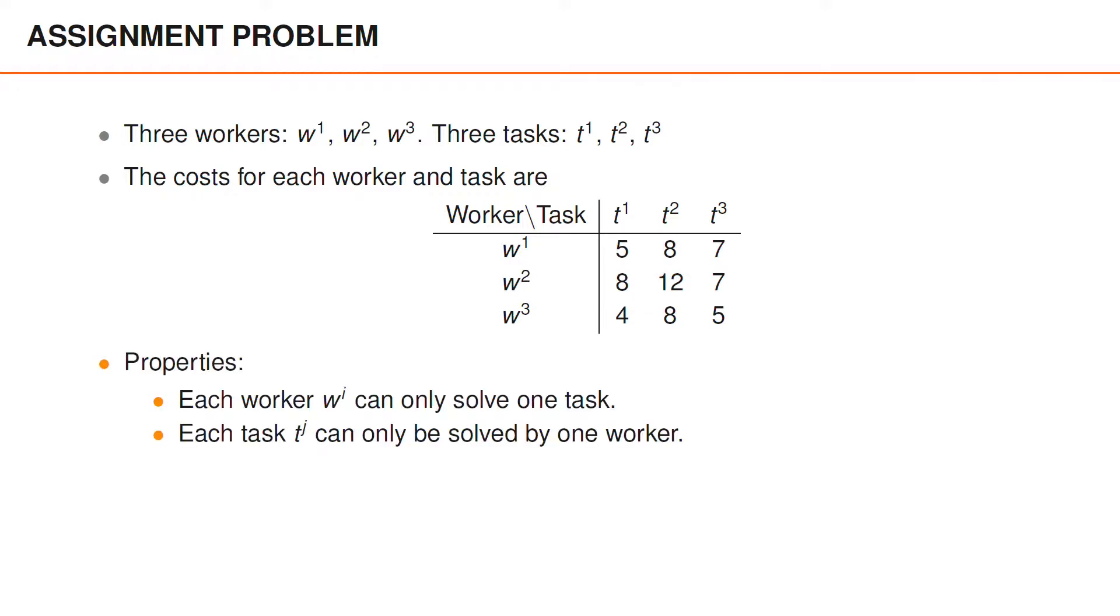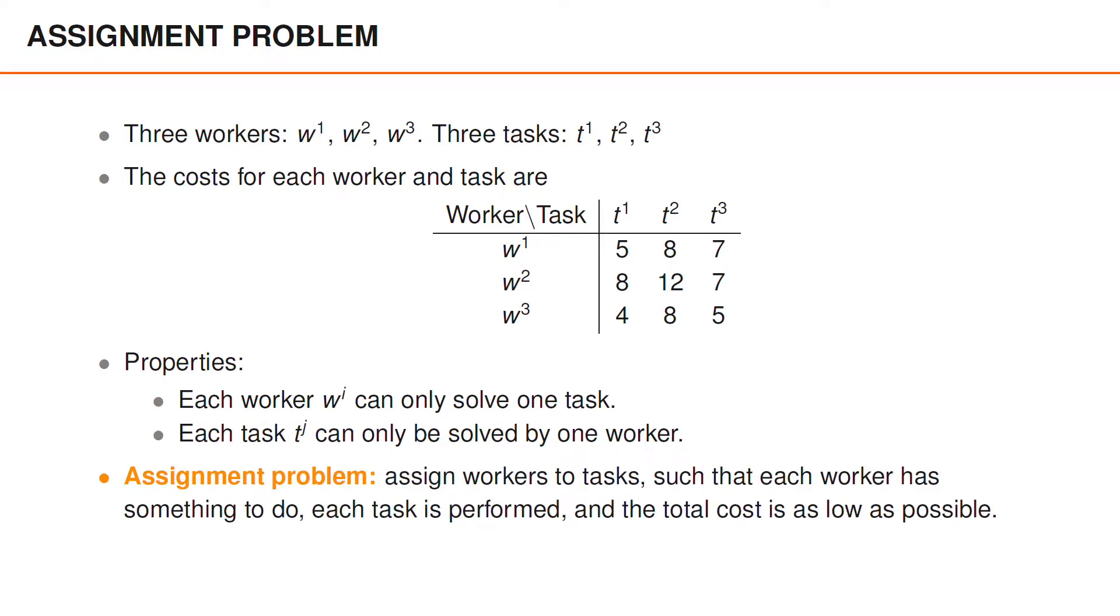Some properties of this problem are that each worker can only solve one task at a time, and each task can only be solved by one worker. The assignment problem is to assign workers to tasks such that each worker has something to do, and each task is performed, and the total cost is as low as possible. Equivalently, we could assign tasks to workers instead, and this assignment problem would have the same optimal assignment. In other words, the same assignment would have the lowest cost.